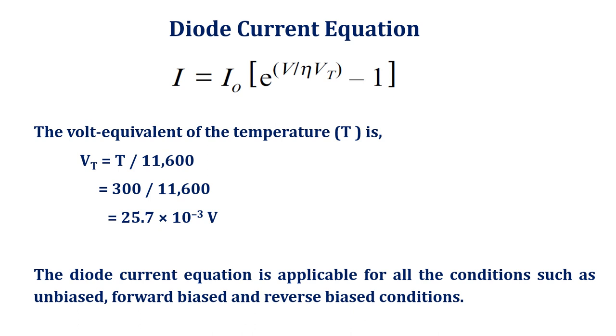The diode current equation is applicable for all the conditions such as unbiased, forward biased, and reverse biased conditions.